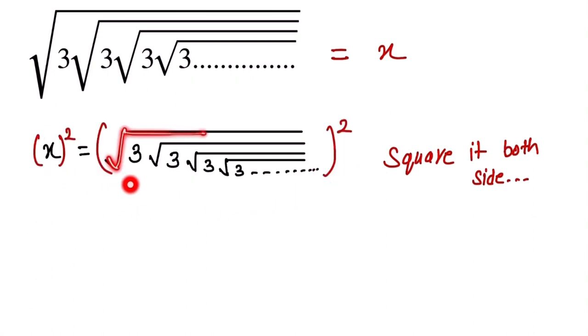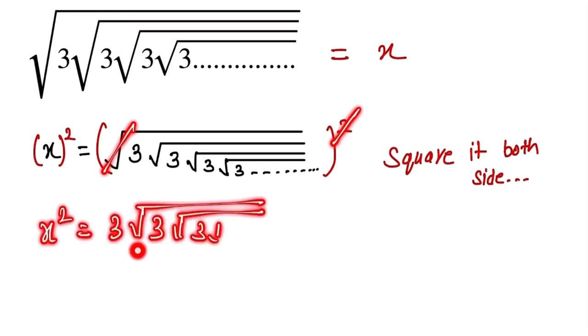Here, under root is cancelled out by square, so here can be written as x² is equal to 3 into under root 3, and under root 3, and under root 3, it goes to infinity.